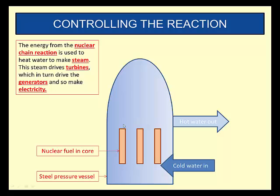Let's have a look at the inside of a core. Here's a nuclear core. We've got cold water going in, hot water going out. We've got a steel pressure vessel containing everything, and here we've got the nuclear fuel in the core itself with these rods. The energy from a nuclear chain reaction is used to heat water to make steam. This water may then drive the turbines, or there could be a secondary loop where that water is heated to make steam to drive turbines, which in turn drives the generators and so makes electricity.